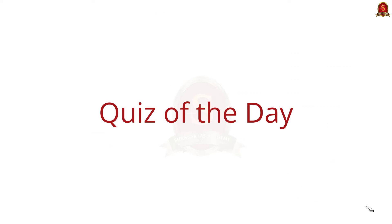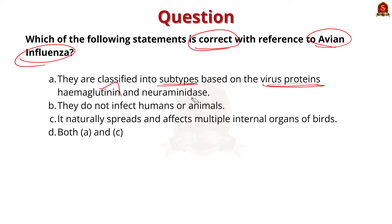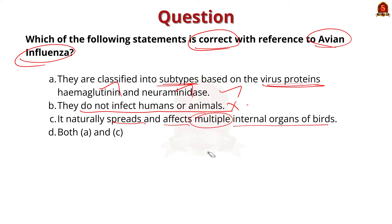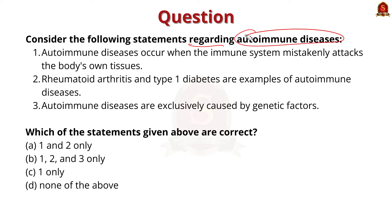Now moving on to prelims practice question discussion. With respect to avian influenza: they are classified into subtypes based on the virus proteins hemagglutinin and neuraminidase — this statement is correct. They do not infect humans or animals — this statement is incorrect because avian influenza does affect humans and animals like swine, horses, and dogs. The statement that it naturally spreads and affects multiple internal organs of birds — this is correct. So the answer is option D: both A and C.